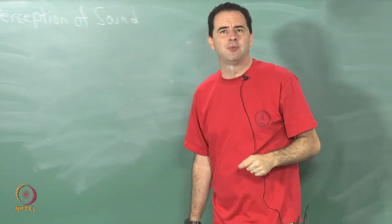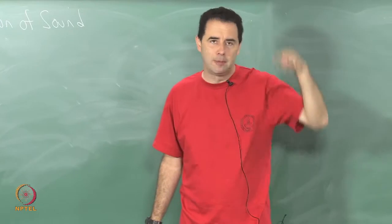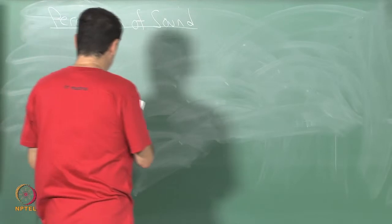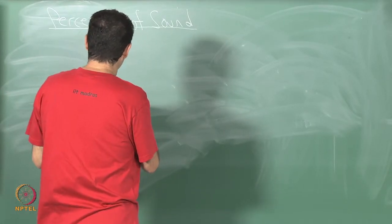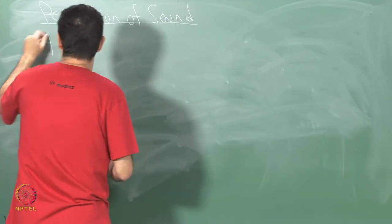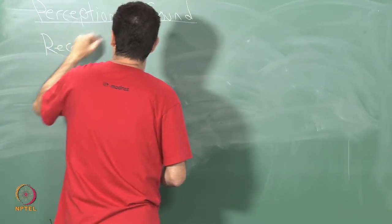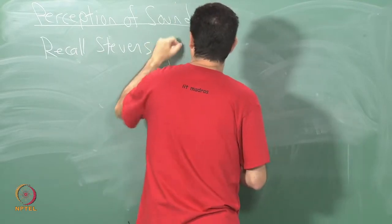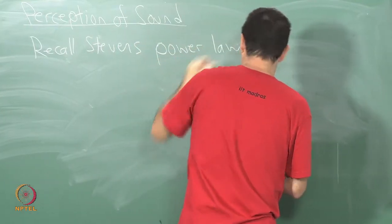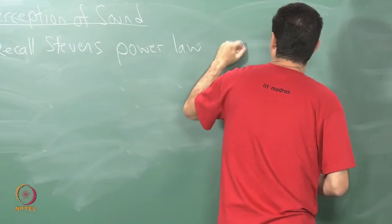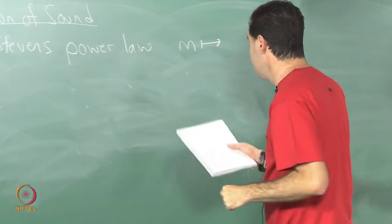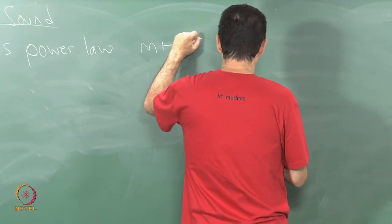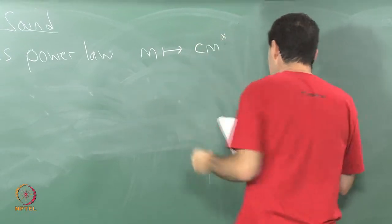Remember for vision we had perception of motion, perception of depth. We are up to the high level now: perception of sound. Way back near the beginning of the course, you may recall Stevens' power law, which takes the magnitude of a stimulus and maps it to the perceived magnitude of the stimulus.